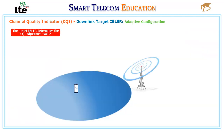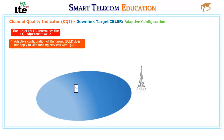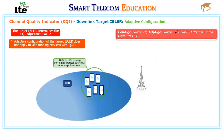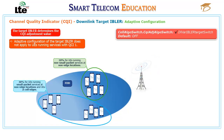The downlink target BLER can be configured both fixedly and adaptively. Adaptive configuration of the target BLER does not apply to UEs running services with QCI 1. The downlink target BLER adaptation is controlled by the downlink variable BLER target switch option of the CQI adjustment ALGO switch parameter. For FDD, if this option is selected, the E-NodeB adjusts the target BLER to 10% for UEs running non-small packet services at non-edge locations, and 30% for UEs running small packet services at non-edge locations and UEs at cell edges.